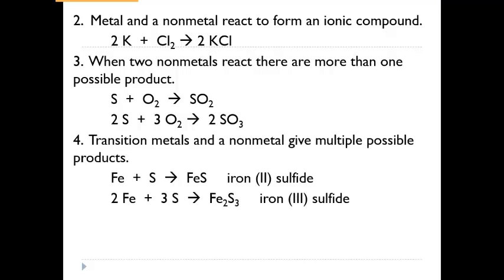Transition metals can have different charges, so when a transition metal combines with a non-metal it forms an ionic compound, but multiple products are possible. For example, iron with a plus two charge reacts with sulfur to form FeS, since sulfur is minus two and one of each is sufficient. But iron with a plus three charge and sulfur (minus two) requires balancing subscripts. So with non-metals or transition metals, there can be more than one possible product.